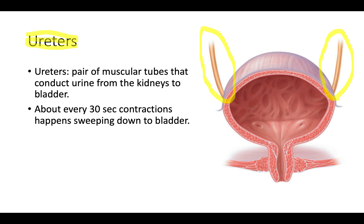We are currently in this state of the urinary system. The urine is already made and now it's on its path outside of the body so our body can get rid of it. The first structure from the kidneys is it going to go into the ureters — these are the muscular tubes that are going to connect from the kidneys into the bladder. And these will contract every 30 seconds, pushing the urine into the bladder, sweeping along and moving the urine from the kidneys and into the bladder.